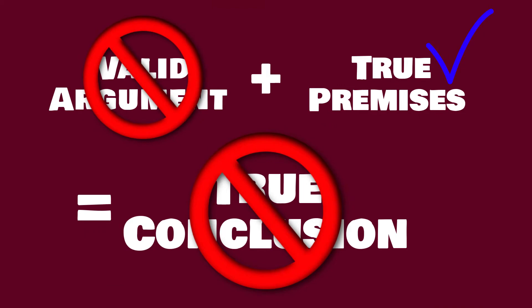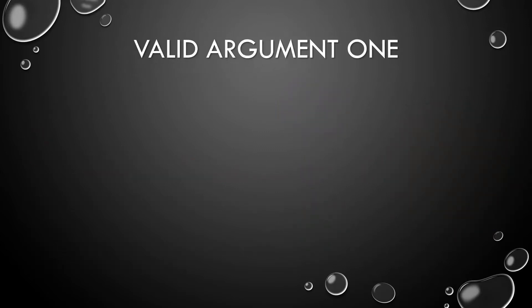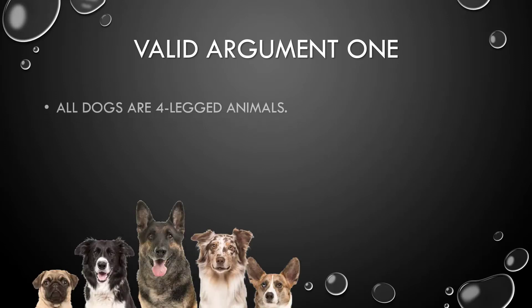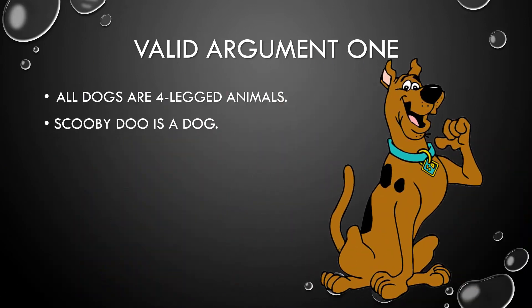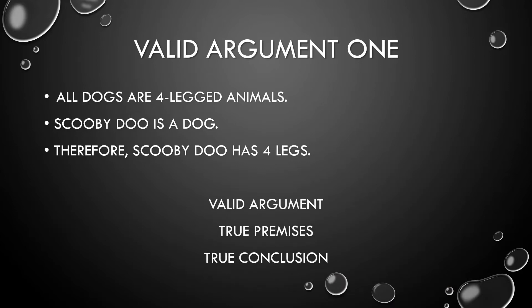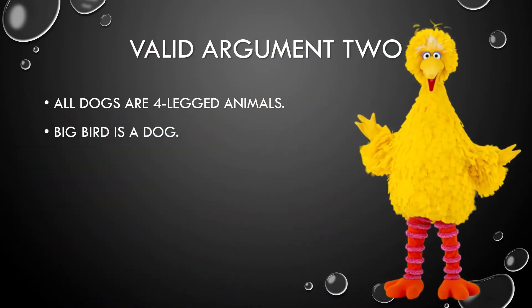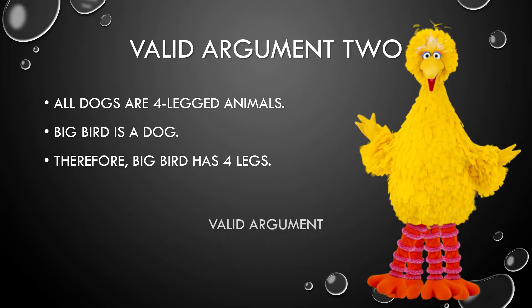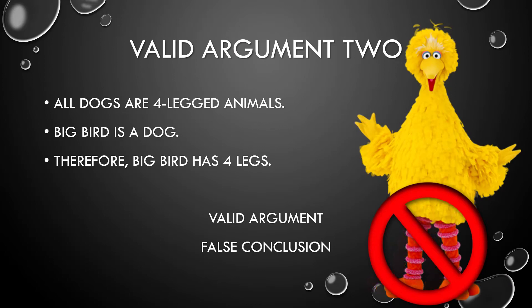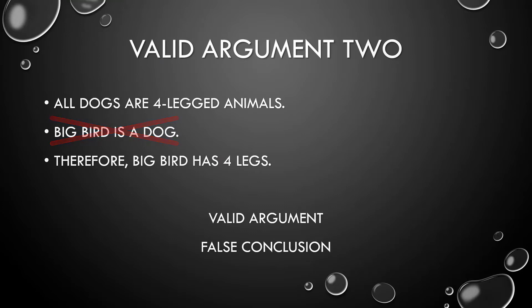Can a valid argument with false premises give us a true conclusion? Yes. Let's review this little series of arguments. First: 'All dogs are four-legged animals; Scooby-Doo is a dog; therefore Scooby-Doo has four legs.' This is a valid argument — true premises and a true conclusion. Next: 'All dogs are four-legged animals; Big Bird is a dog; therefore Big Bird has four legs.' Again, valid — but we actually have a false conclusion, and it's clearly the fault of the minor premise. Big Bird is not a dog. We wouldn't have had a false conclusion if it weren't for a false premise — that's impossible in a valid argument.